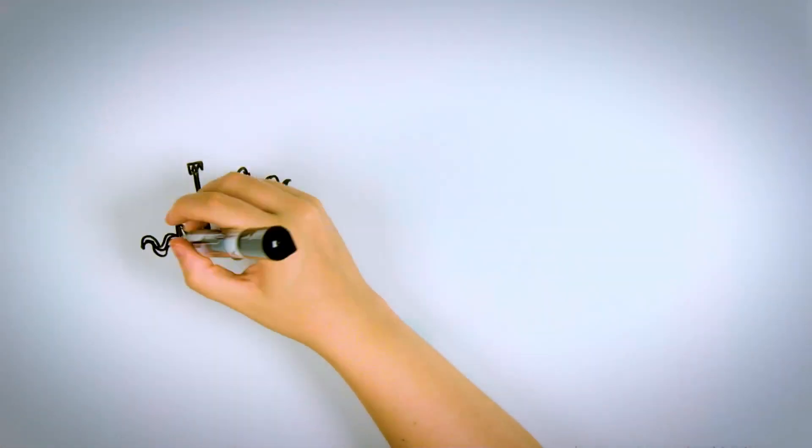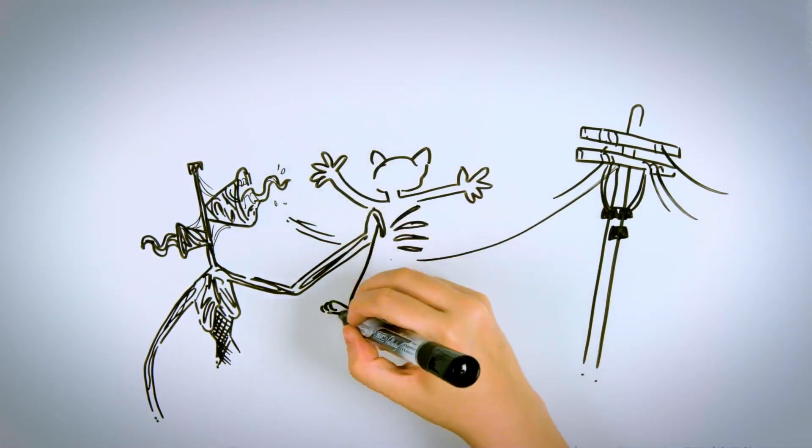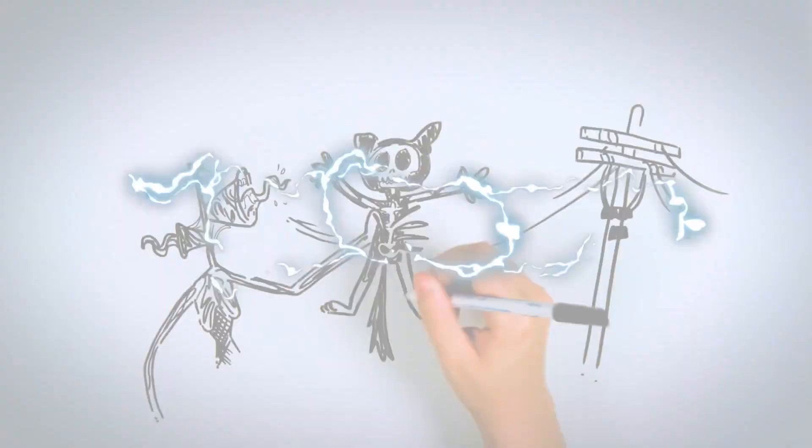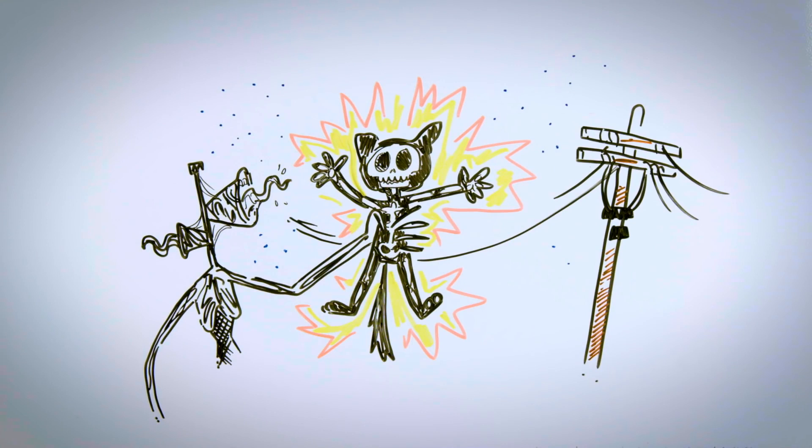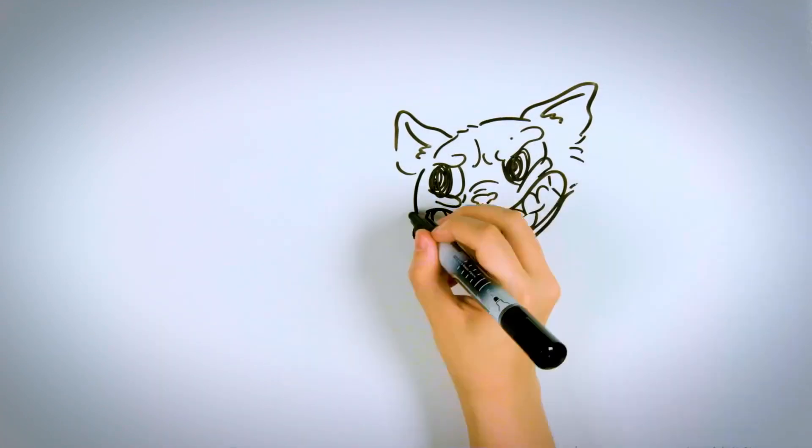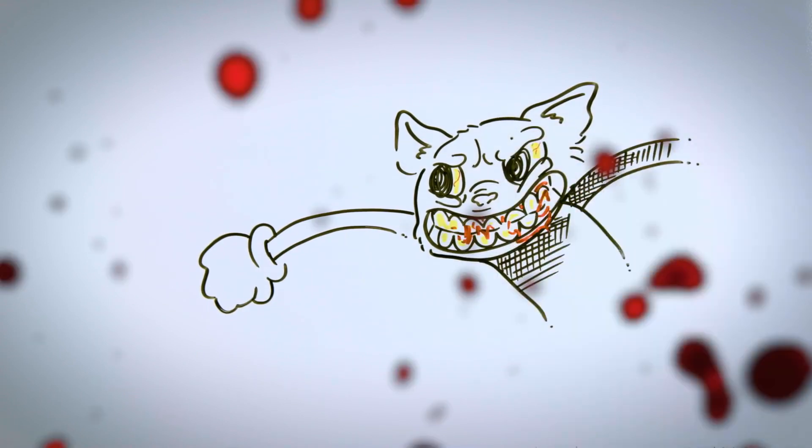Siren Head, with no other purpose than to finish with Cartoon Cat, brings him closer to the high tension, electrocuting him. Siren Head lets him fall to the ground. It looks like he won't be getting up, but Cartoon Cat draws strength from his weakness and stands up.